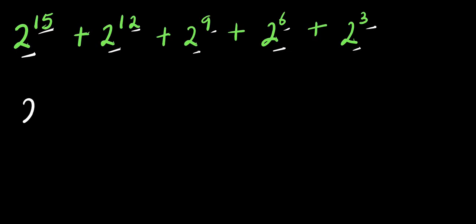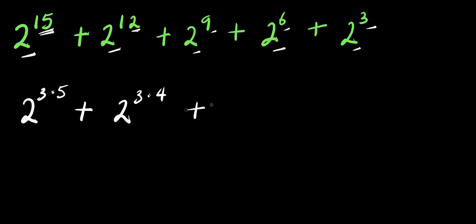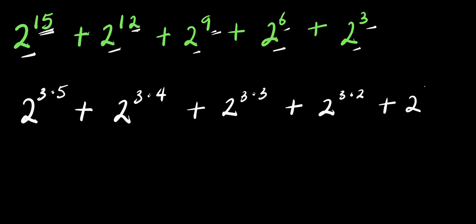Now we have 2^15, and we can express it as 3 times 5. We can express 2^12 as 3 times 4, 2^9 as 3 times 3, 2^6 as 3 times 2, and 2^3 as 3 times 1.